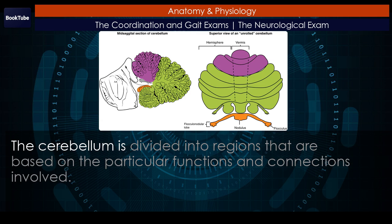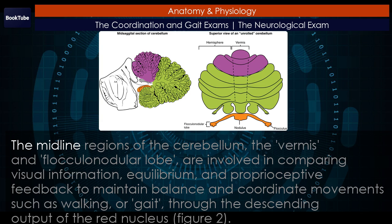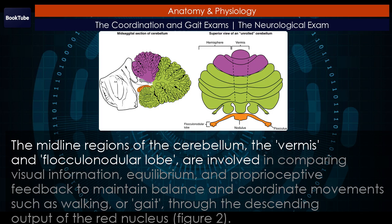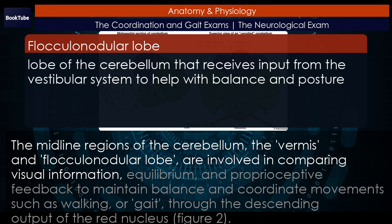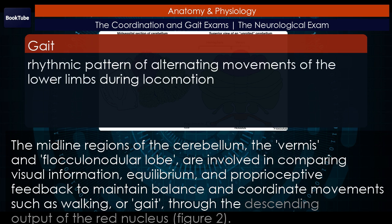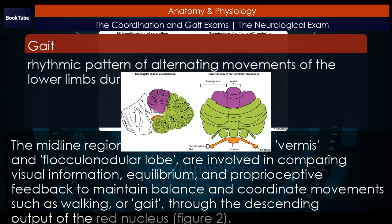The cerebellum is divided into regions based on particular functions and connections. The midline regions of the cerebellum, the vermis and flocculonodular lobe, are involved in comparing visual information, equilibrium, and proprioceptive feedback to maintain balance and coordinate movements such as walking or gait through the descending output of the red nucleus.